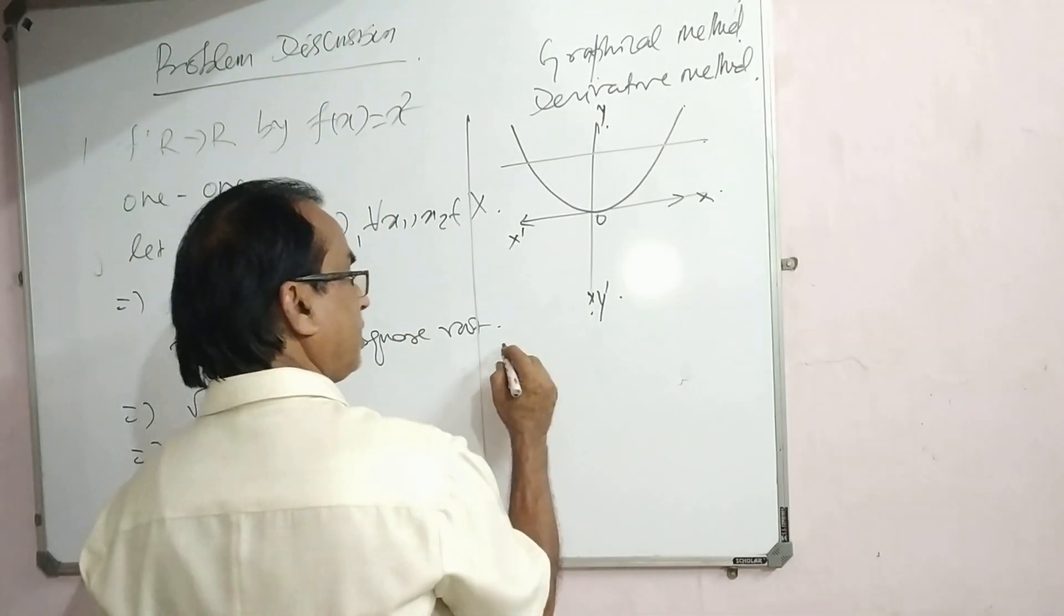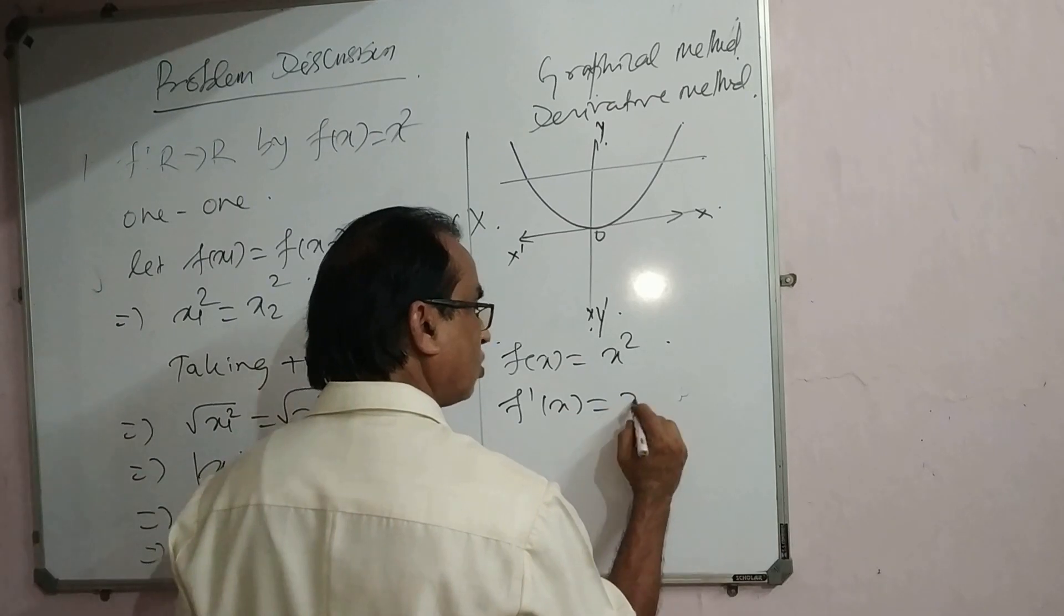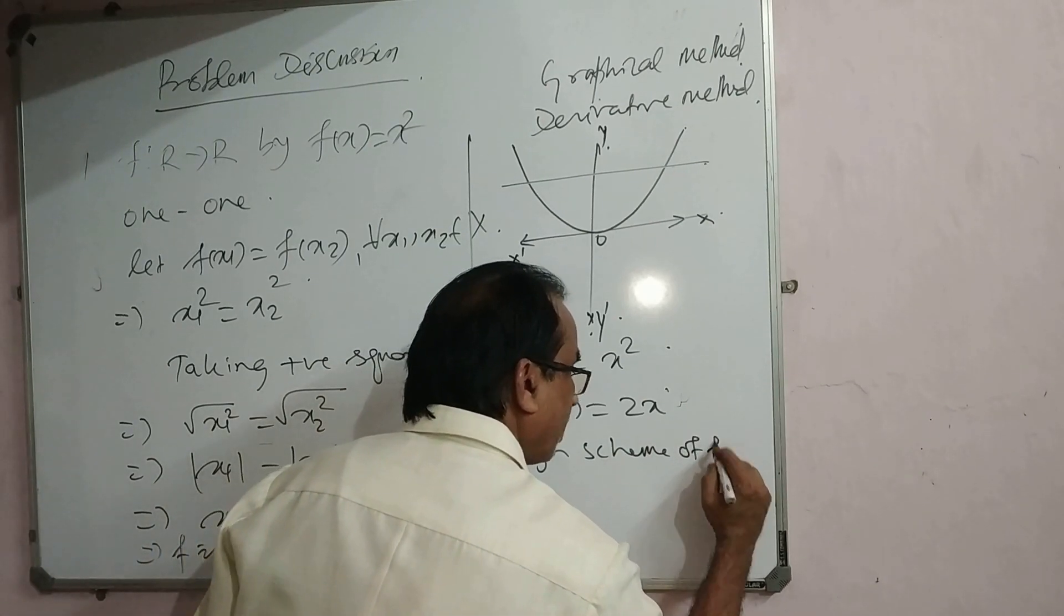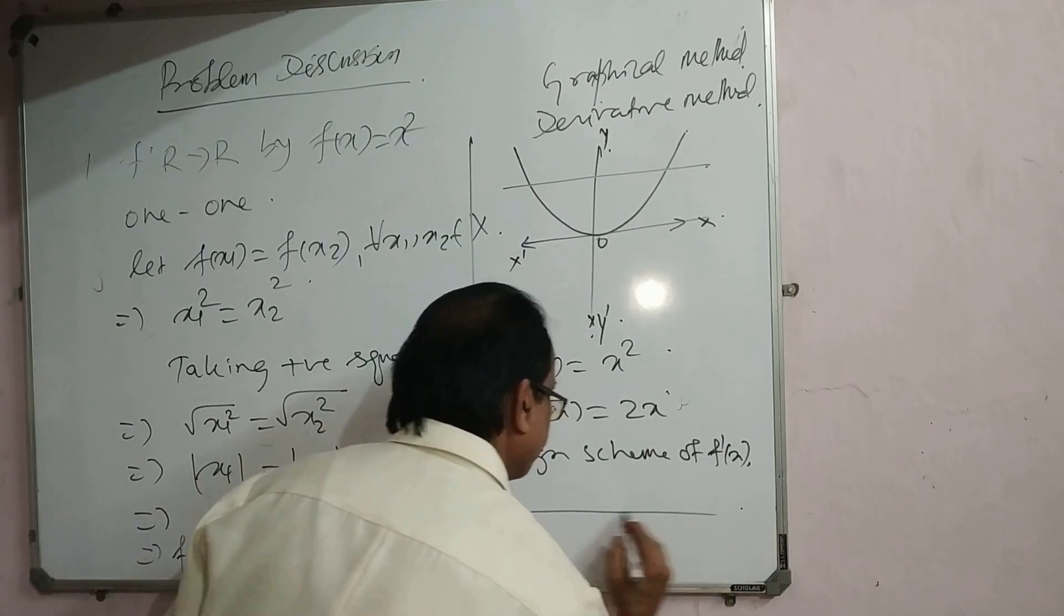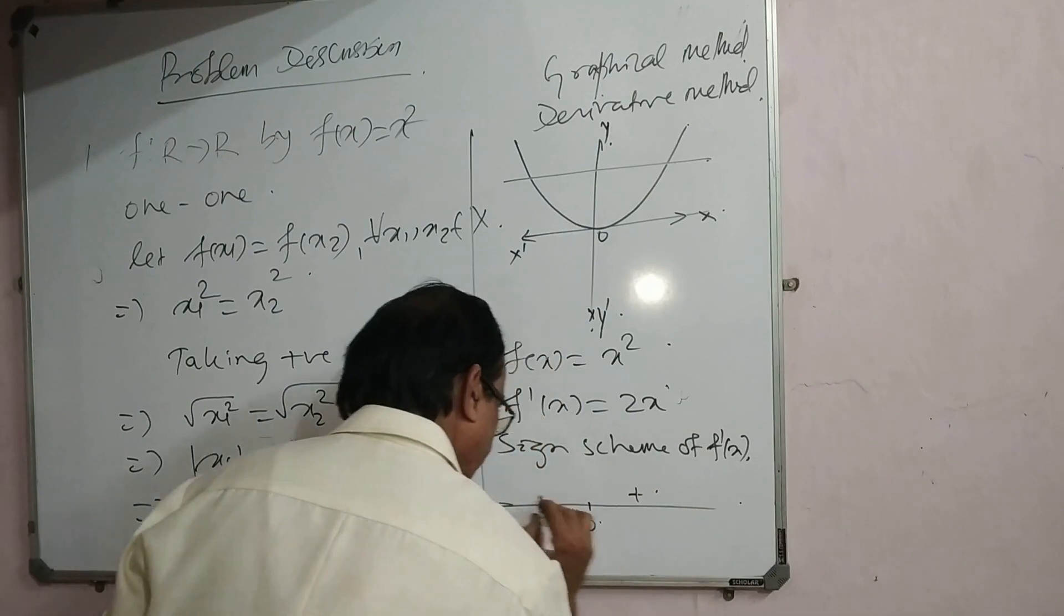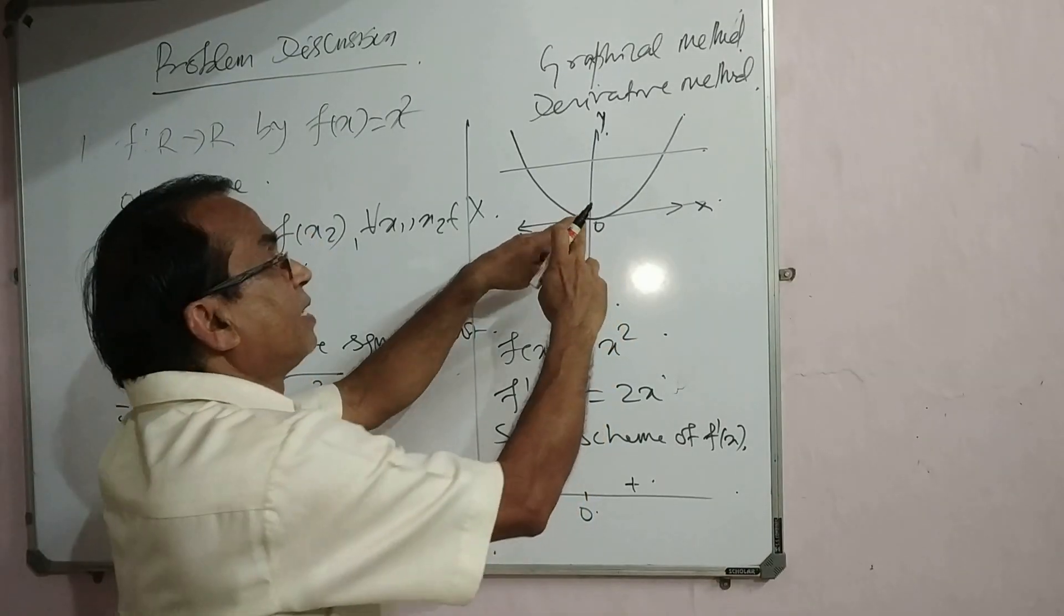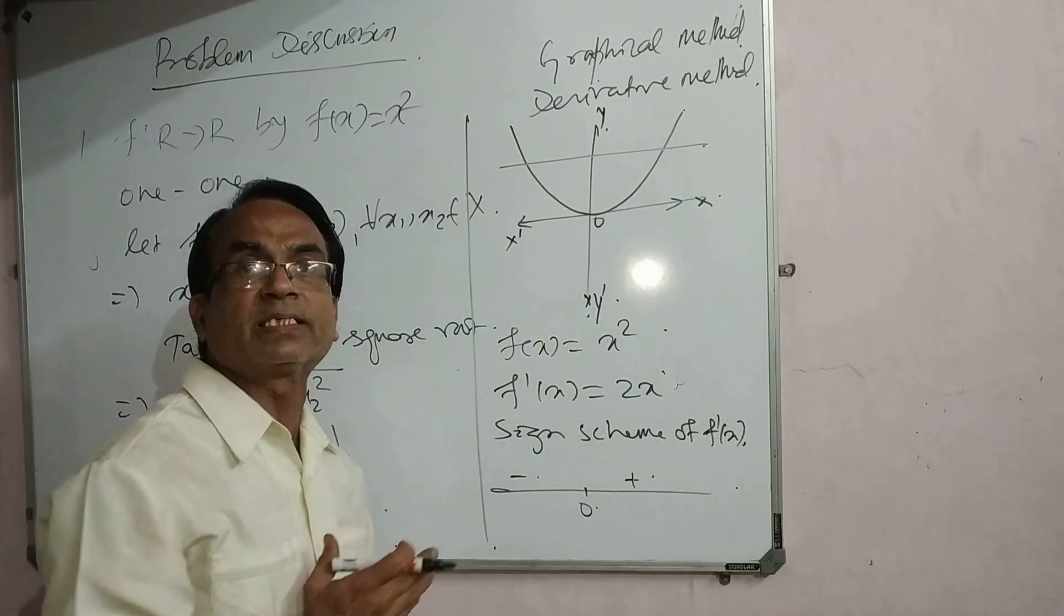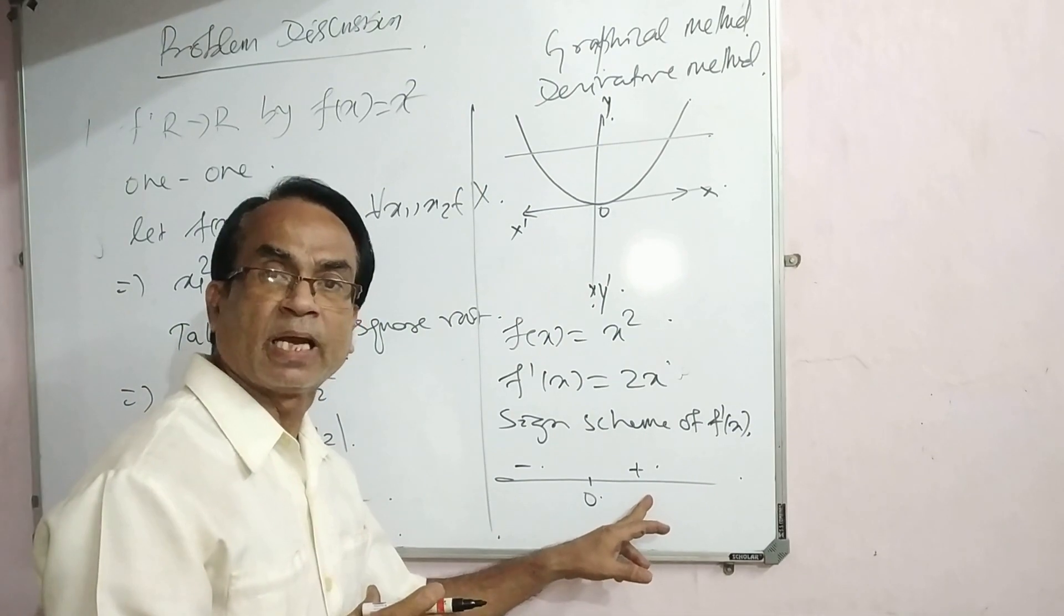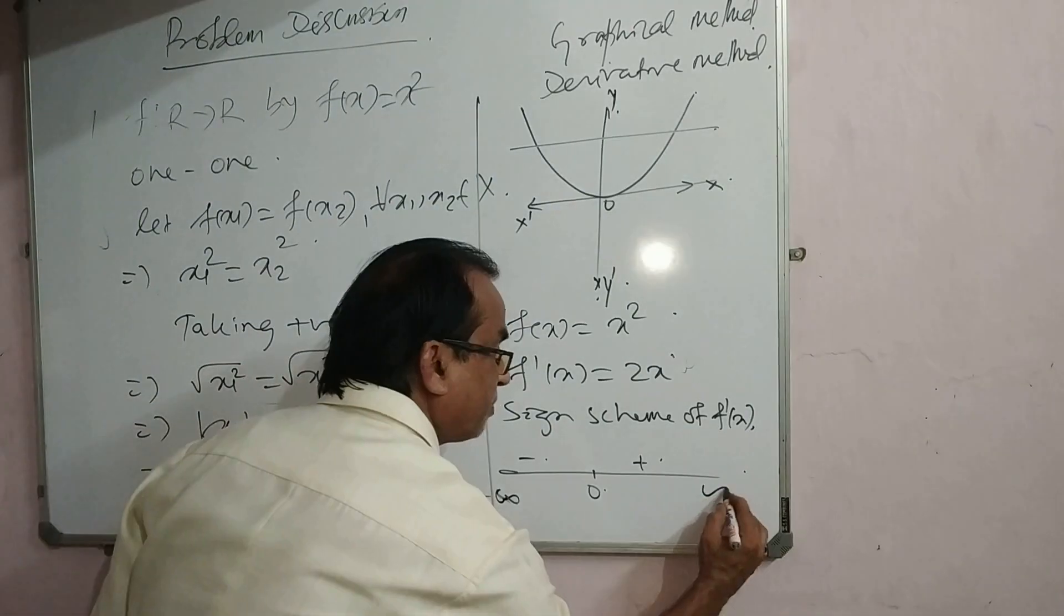If you go by NCERT method it takes time, but by graphical method only few seconds. Here f(x) equals x squared and f'(x) equals 2x. The sine scheme of f'(x) shows from 0 to right it is increasing, from 0 to left it is decreasing.